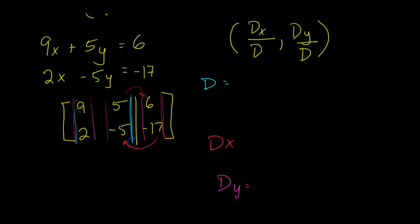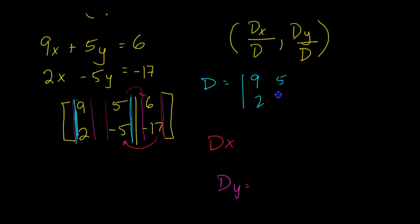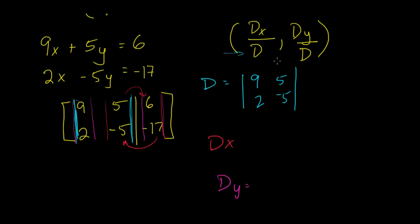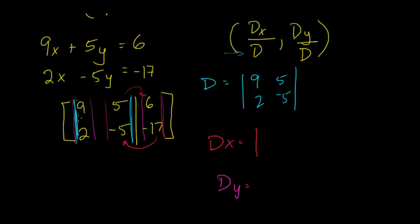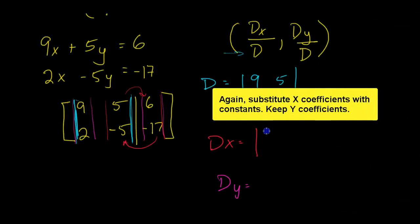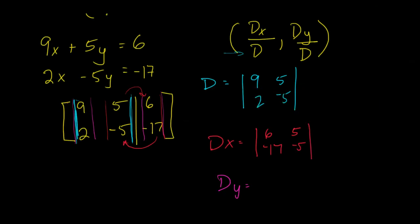The determinant here will just be our 9, 2, 5, and negative 5. We'll use that as our divisor for the ratio of d of x divided by d, and d of y divided by d. Then our d of x will be, we're not going to use this 9 and 2, because that's what we want to find. So we're going to replace that with our 6 and negative 17, and we'll keep our 5 and negative 5.